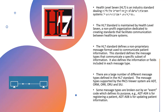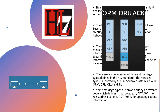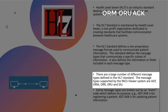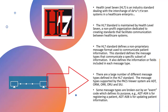The message types supported by the PACS viewer system are the Admission, Discharge, and Transfer, or ADT, the ORM, ORR, ORU, and SIU, which we will see what those different abbreviations mean in just a few minutes. There are a large number of different message types defined in the HL7 standard.